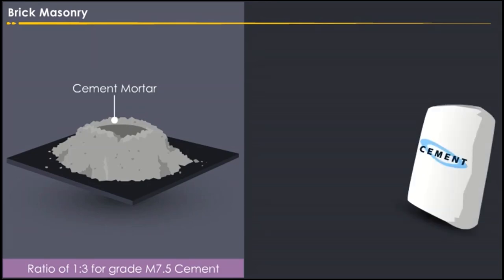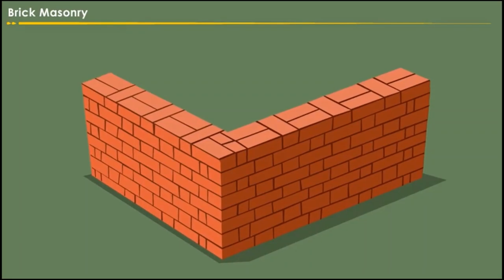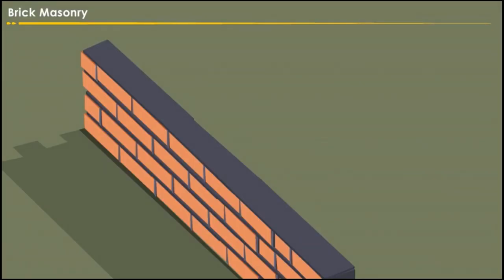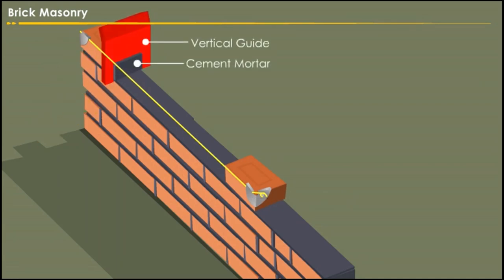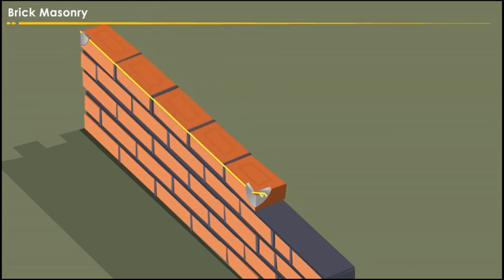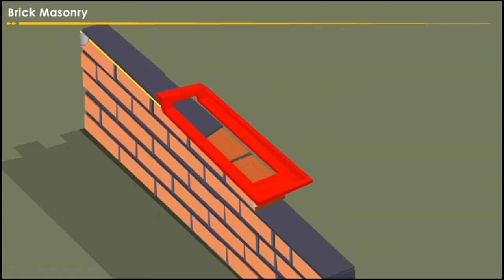That is one bag of cement for three bags of sand. Add water to the cement in a ratio of 70% of the weight of the cement. For one brick thickness wall construction, start by first laying the header face. Keep two bricks each at one end by placing cement mortar below them. Temporarily fix the mason mate and tie a thread at the top corners as shown on the screen. Place the cement mortar using the vertical guide, finish the header row, and place cement mortar above it with the horizontal guide. Continue the same process for the stretcher row.